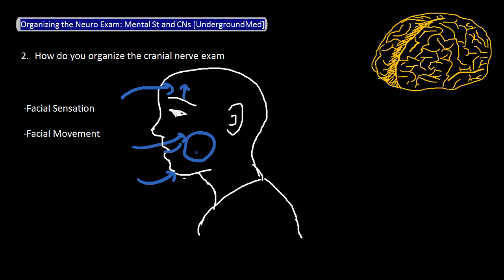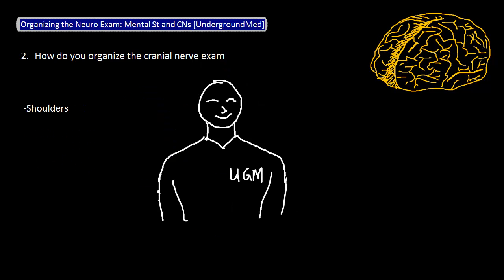Finally, move down below the face to the neck and shoulder. To assess the neck, place your hand on the patient's cheek and ask the patient to turn his or her head against resistance. Do this for the other side. All of this covers cranial nerve seven. To assess cranial nerve eleven, place your hands on the patient's shoulders and have him or her shrug their shoulders against resistance. Believe it or not, you have just gone over every cranial nerve from two to twelve.